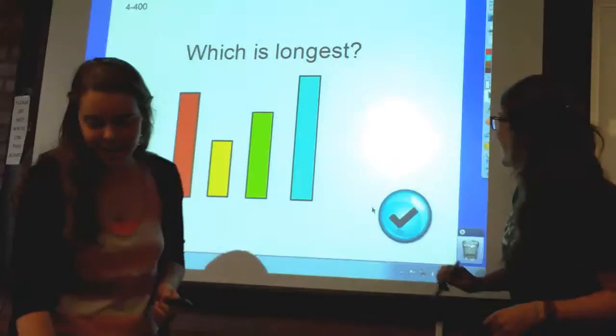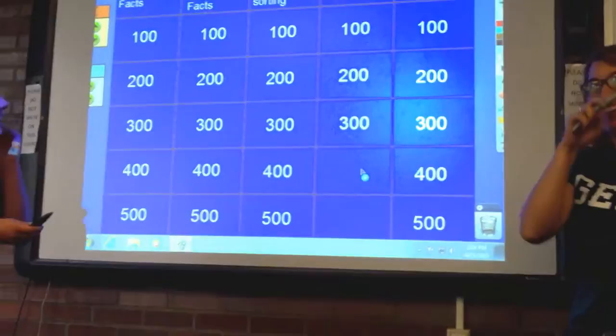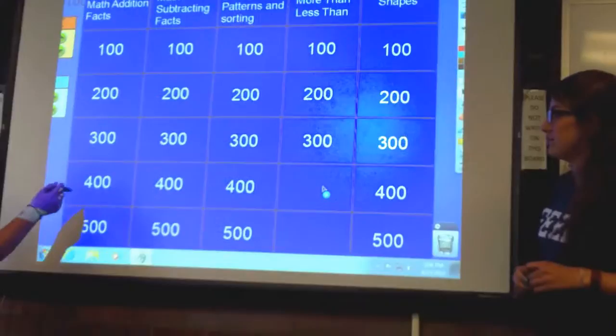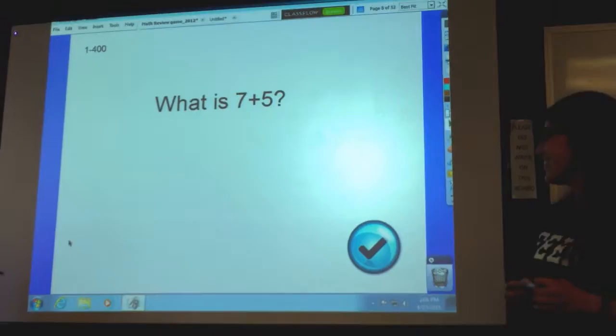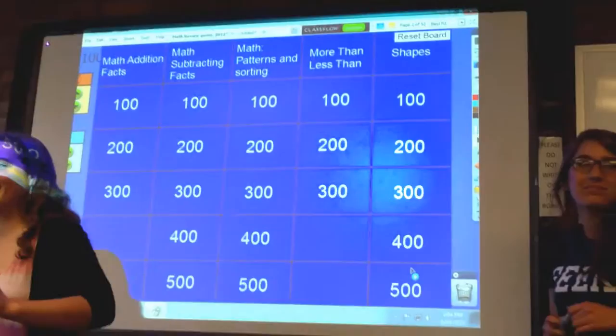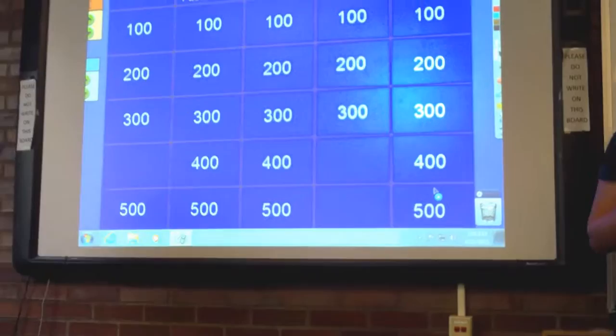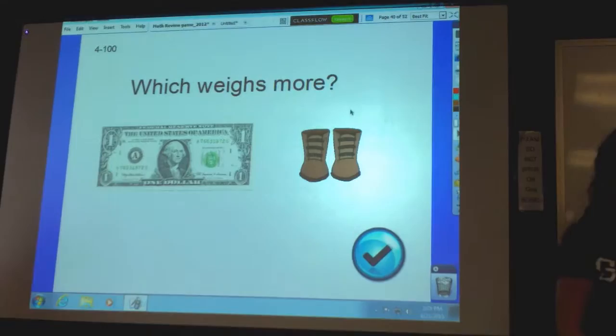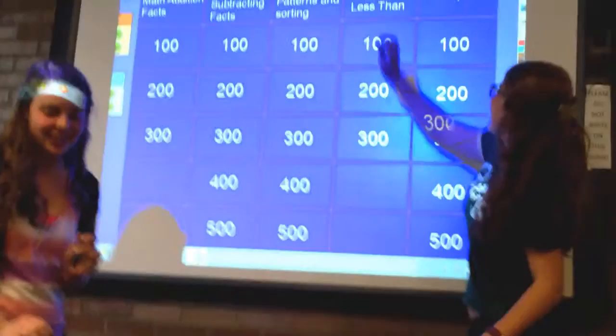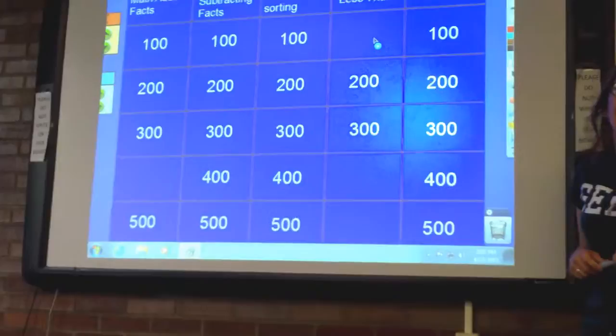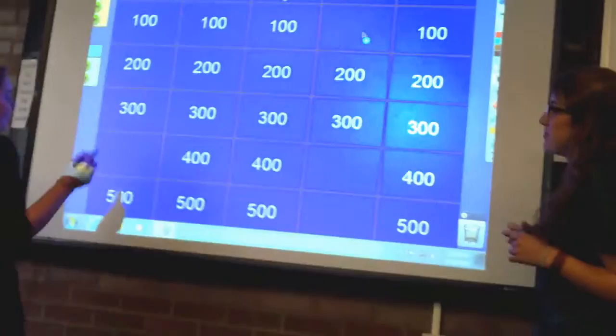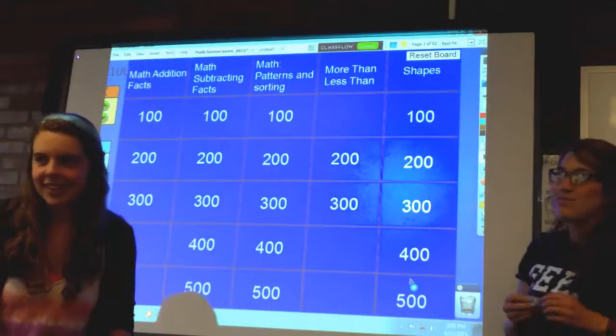For Hannah. I'll do math addition facts for 400. What is 7 plus 5? It is 12. What is 12? We're going to have to go with a better strategy. More than less than for 100. Which one is more? Are those boots? Yeah, the boots. Sherry. Math addition facts for 500. What is 8 plus 6? What is 14? Oh yeah.